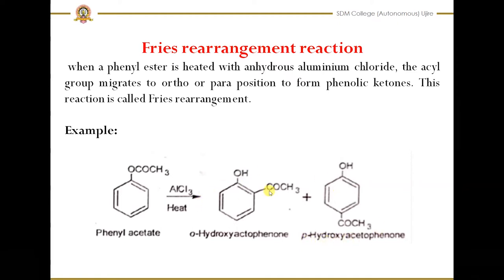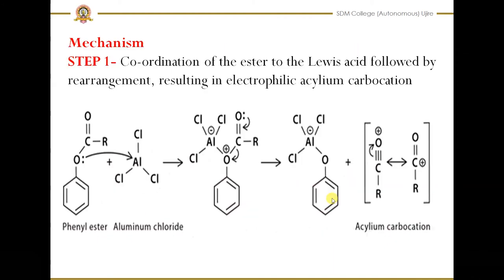In Step 1 of the mechanism, there is coordination of the ester to the Lewis acid — anhydrous aluminum chloride is the Lewis acid. The lone pair electrons on the oxygen attack the anhydrous aluminum chloride to form a coordination bond, so we get a structure where oxygen carries a positive charge.